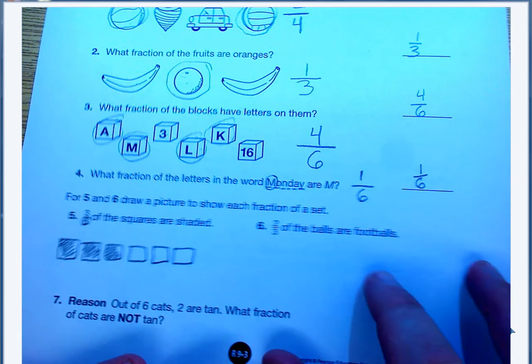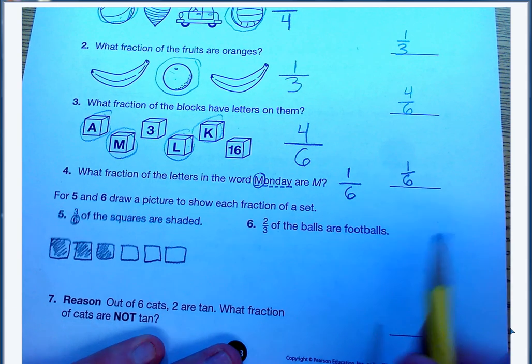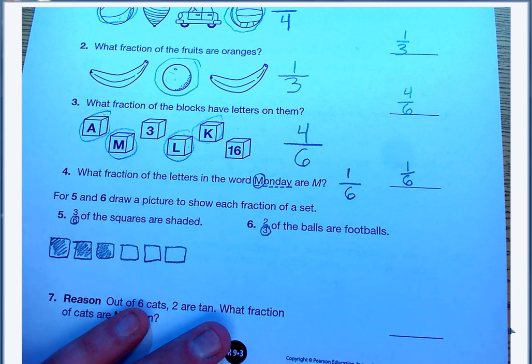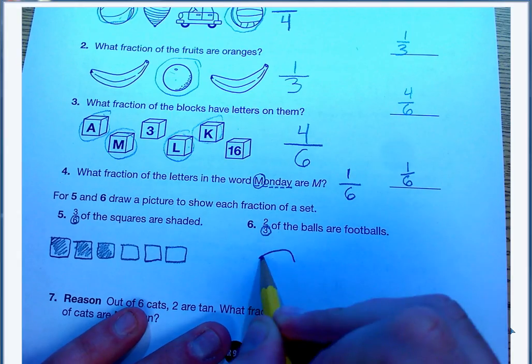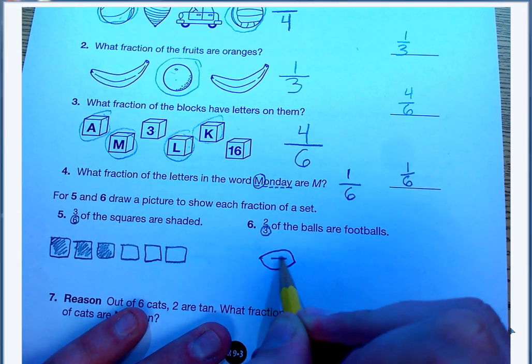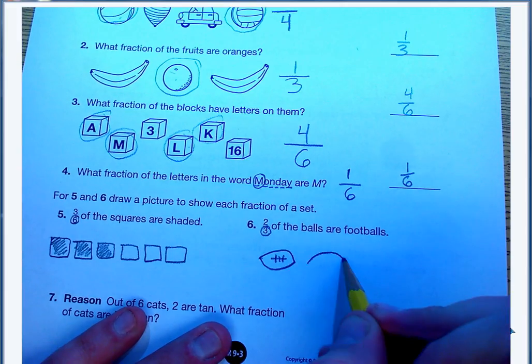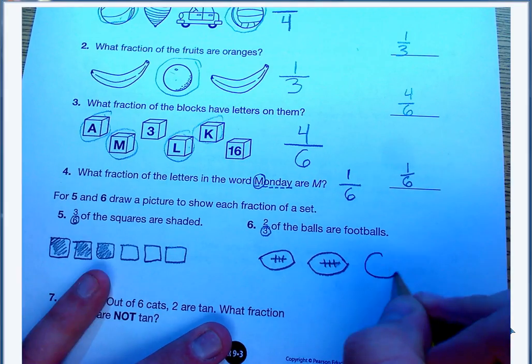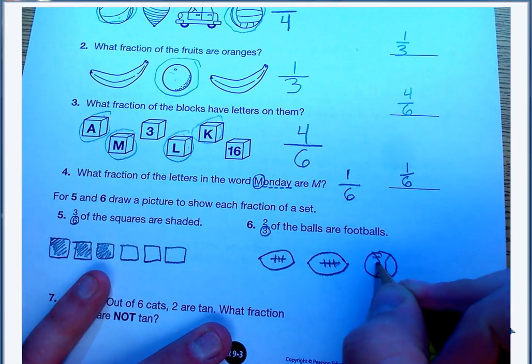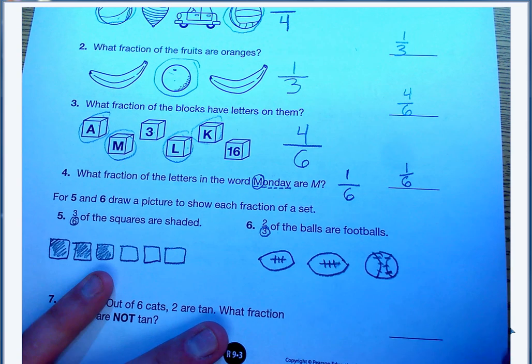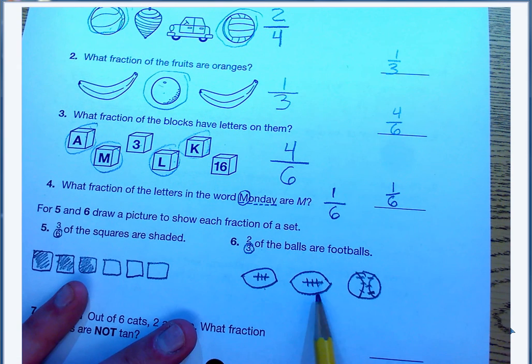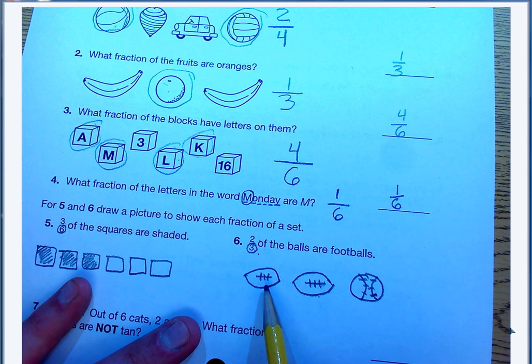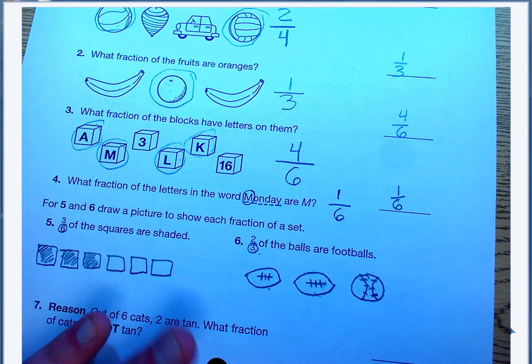Number 6, 2 thirds of the balls are footballs. If I have 3 as my denominator, I know I need 3 balls here. I'm going to draw 1. Don't make fun of my artwork. 1 football, 2 footballs. And then I need 1 more ball that's not a football. I'll draw a baseball. A couple stitches. You can see that I have 3 balls total. But only 2 out of those 3 balls are footballs.